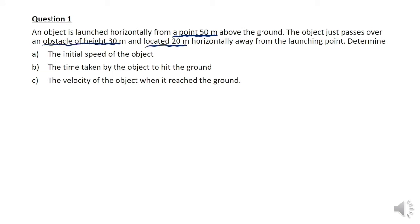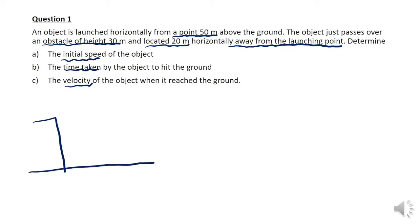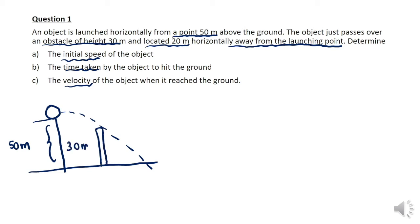Now let's solve question one, where we have an object launched horizontally from a point 50 meters above the ground. There is an obstacle of height 30 meters that it passed over, located 20 meters horizontally away from the launching point. We sketch the situation: initial height is 50 meters, the obstacle is 30 meters, and the horizontal distance to the obstacle is 20 meters.